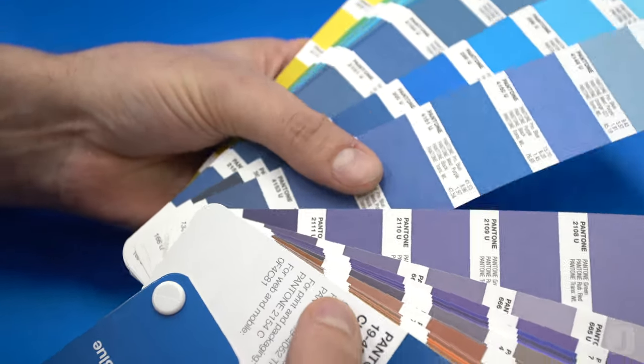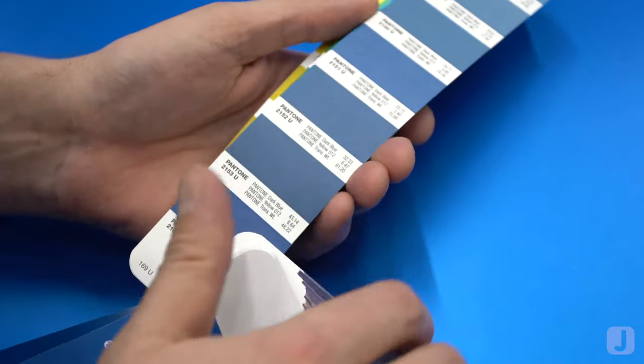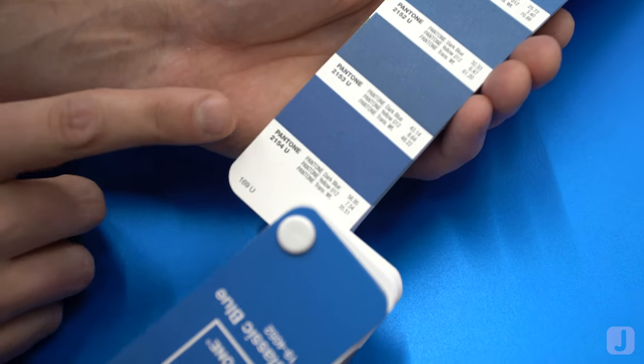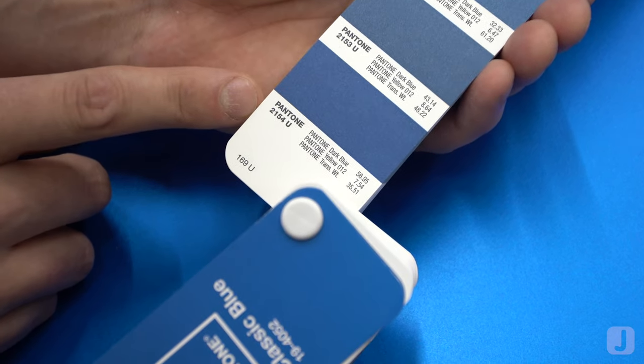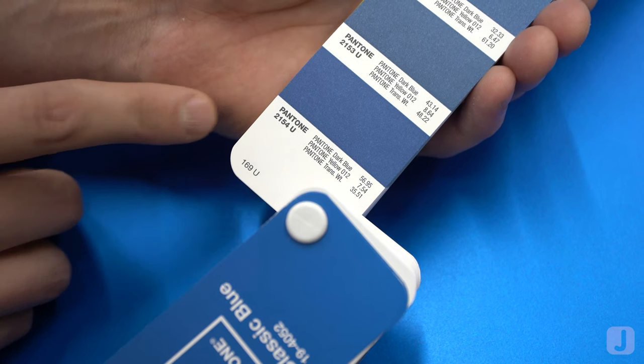Today we'll be creating classic blue using letterpress ink on an uncoated cotton paper. So we'll be referencing 2154U from the uncoated formula guide to mix this color.